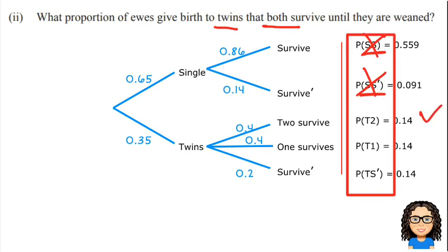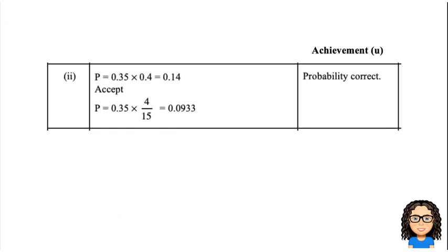So all I need to do is say the probability of twins where 2 survive is 0.14. And doing that gets us through to a U for achieved.